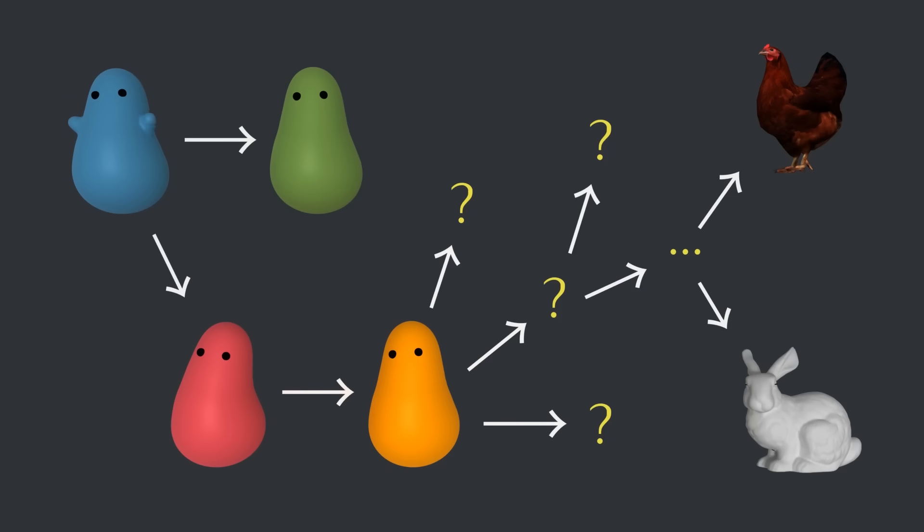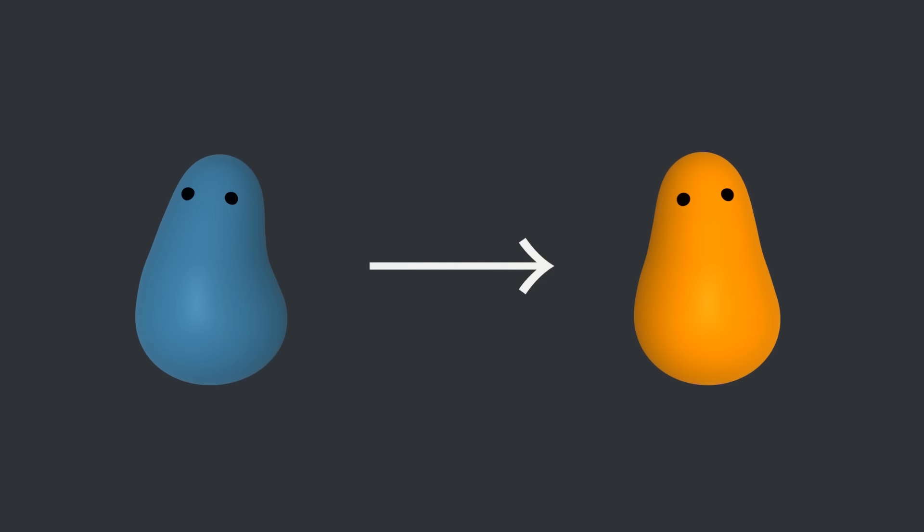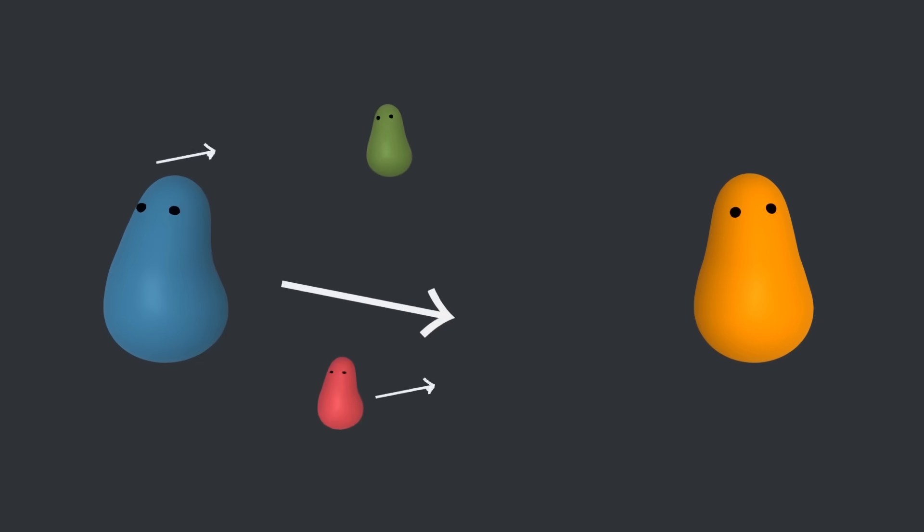And this blue kind is the first replicator. It's simple enough to form without replication in the right environment, but it's also complex enough to make more of itself. And even though there's never a huge number of them, it's the seed that everything else comes from. So if we were imagining the situation, why did we bother with the green and the red creatures? Wouldn't it be more convenient to just have a blue creature mutate directly into an orange creature? Well, maybe, but that feels a little bit too convenient, don't you think?